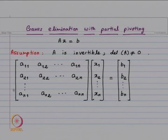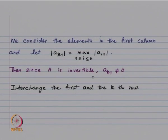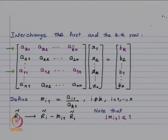What we do is: we first look at the first column and consider the element which has maximum modulus. If it is in the kth row, we interchange the first and kth row. Since A is invertible, a_{k1} is not equal to 0, because if a_{k1} were 0, then each entry in the first column would be 0, giving a zero column, which would mean the determinant of A is 0. So we interchange the first and the kth row.